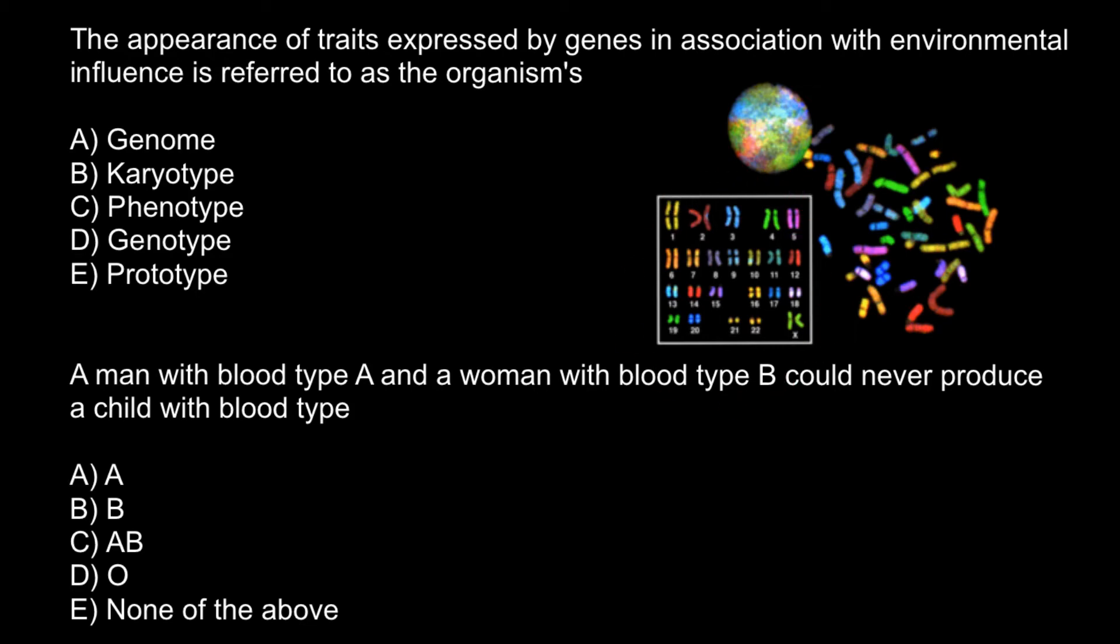Many genetic disorders we can analyze just by looking at karyotype. Next variant of the answer is phenotype. So phenotype is genotype plus environmental influence. So the correct answer would be answer C.